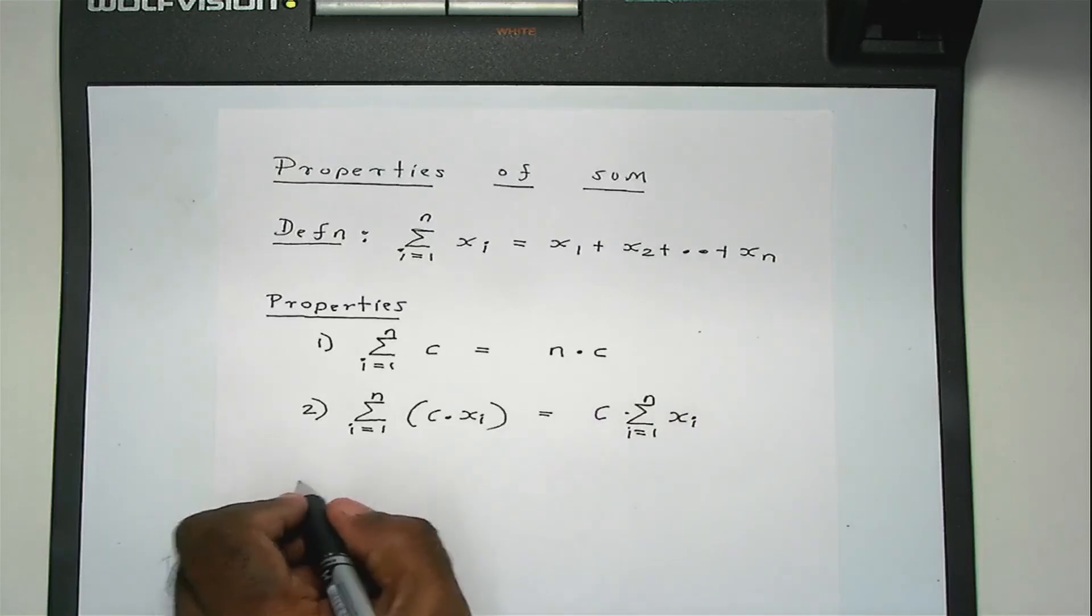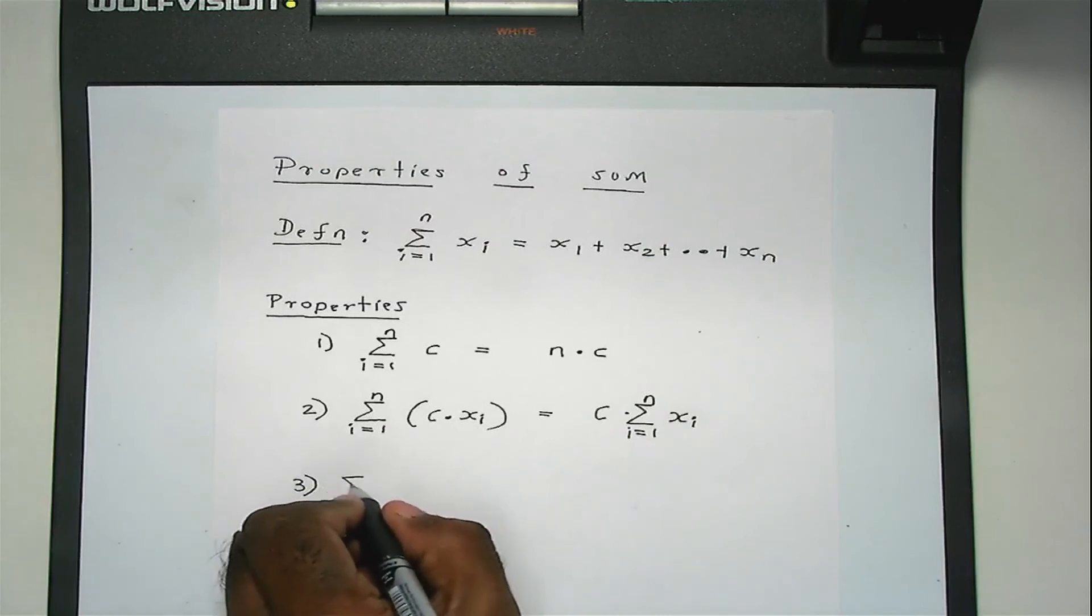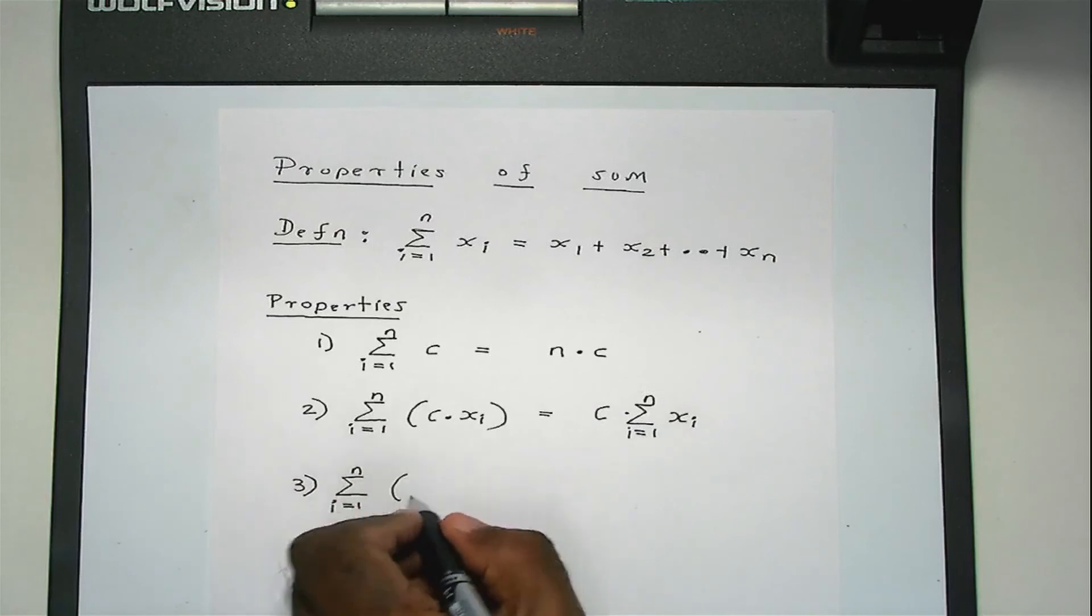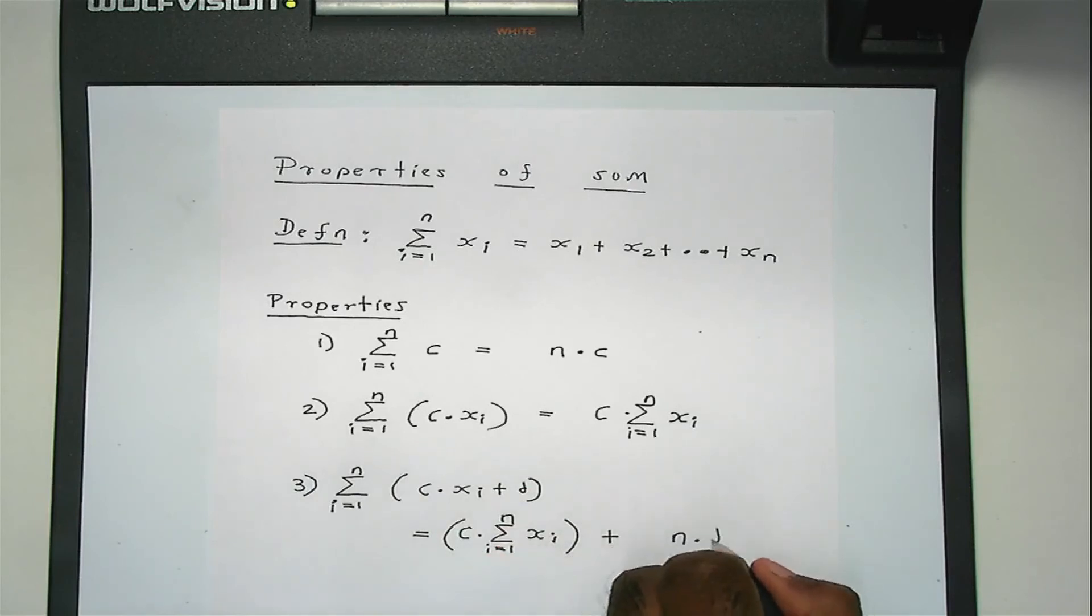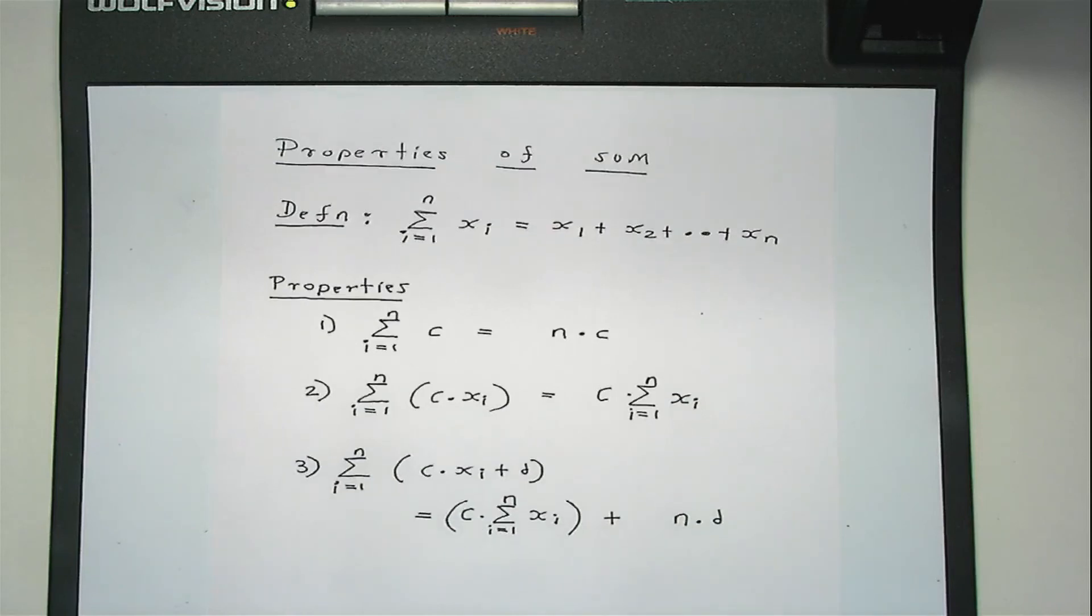And property number three, which you have something like this, is equal to—you can write this as constant times the sum of XI plus n times the constant D. So in this case there are two constants C and D, so the sum of this is constant times the sum of XI plus n times the second constant D.